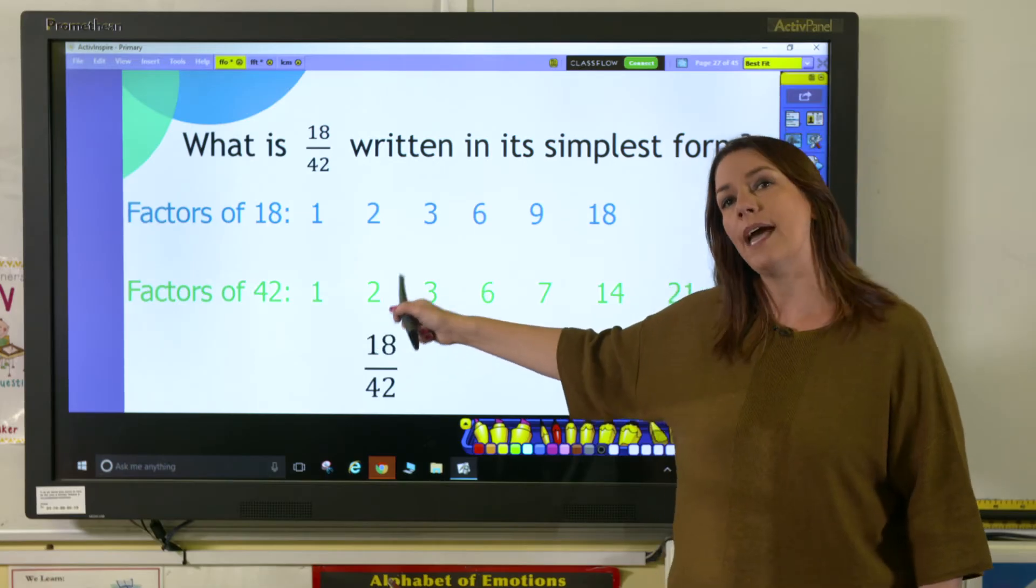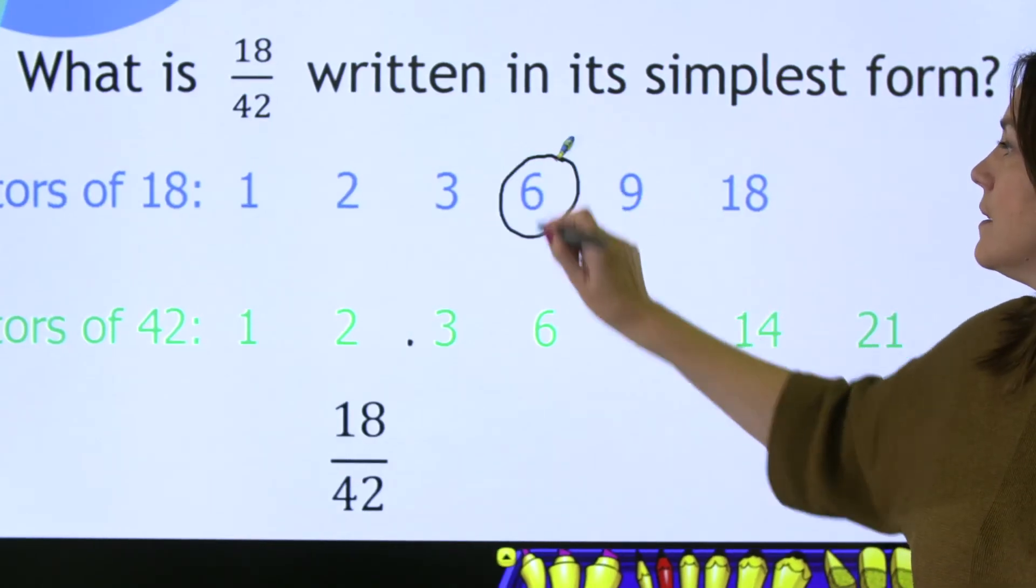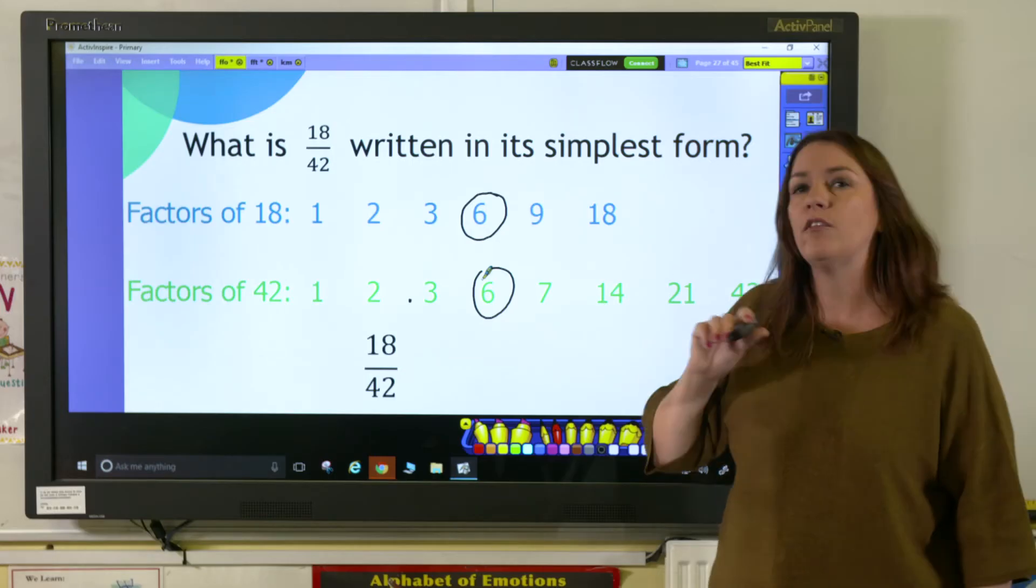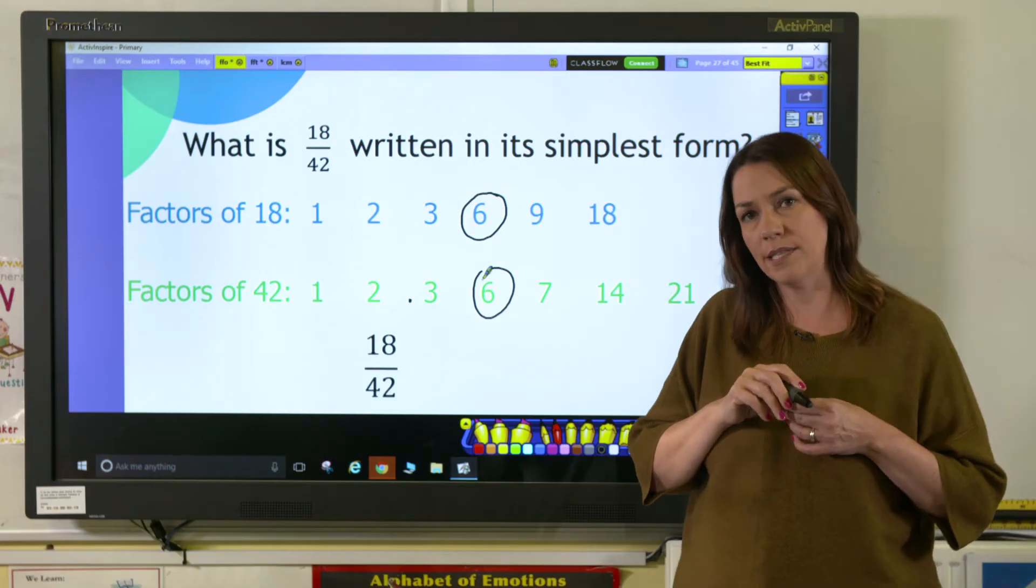We have 1, 2, 3, and 6 is the highest common factor. So to simplify, I need to divide the numerator and the denominator by 6.